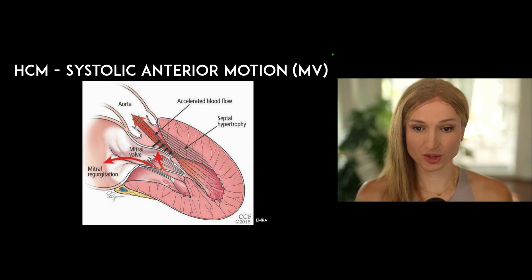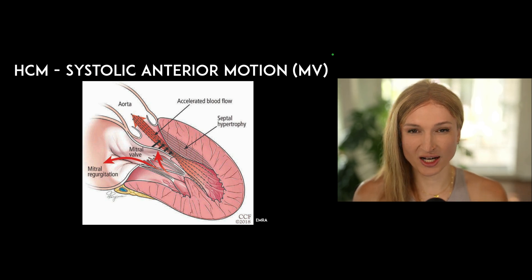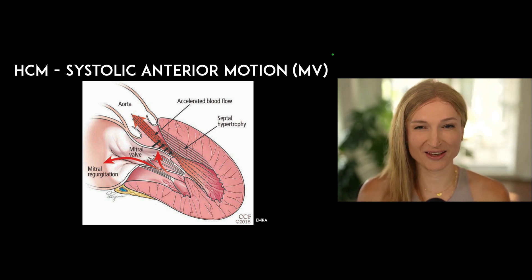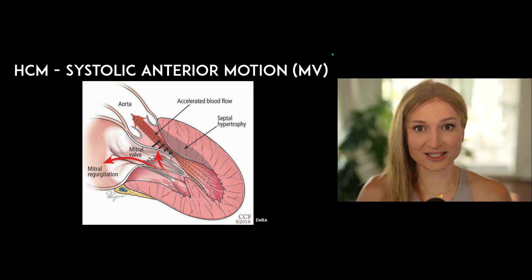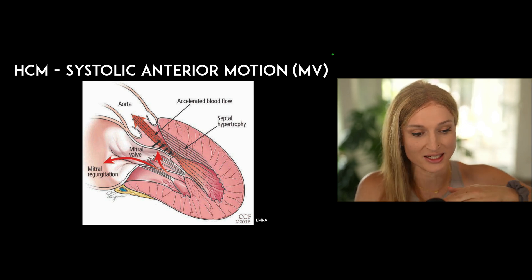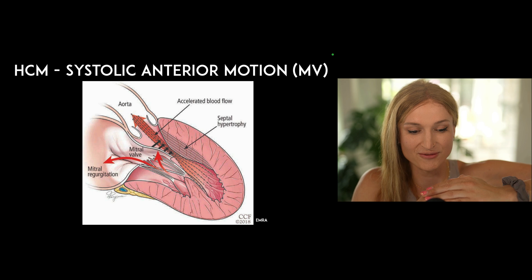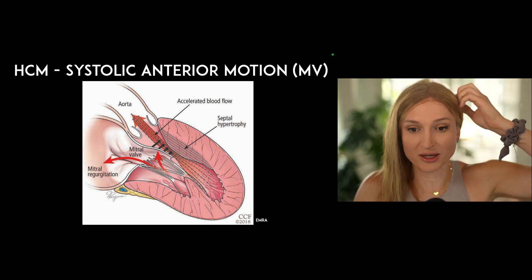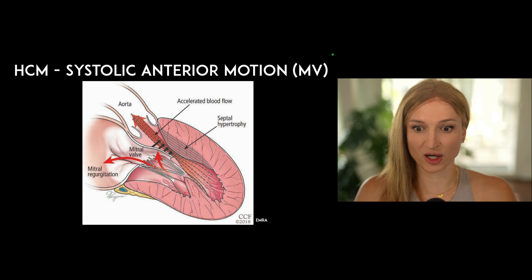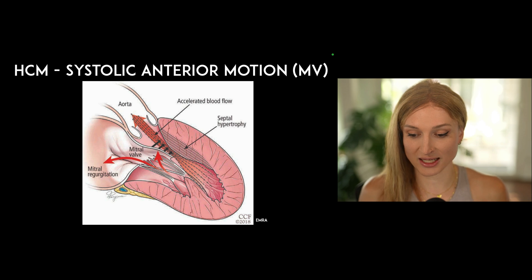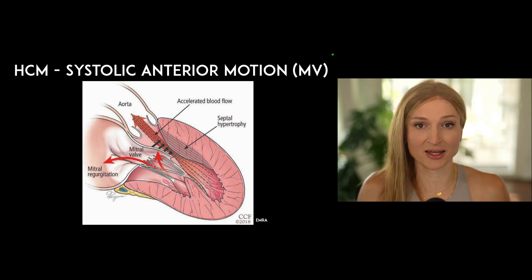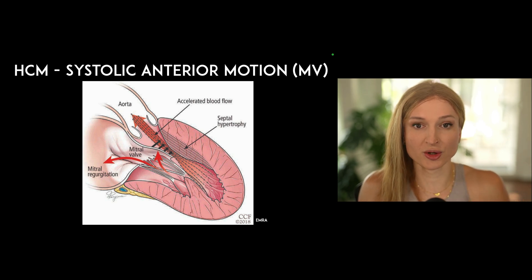The issue with HCM is that it can cause obstruction to outflow via the Venturi effect. Whenever you have something narrowed and flow going through it, that creates increased velocity, which will suck the mitral valve leaflet into it, creating even worse obstruction to outflow. But to be clear, this is not the only mechanism — there are also problems with electrical conduction through those abnormal cardiac muscle fibers as well.